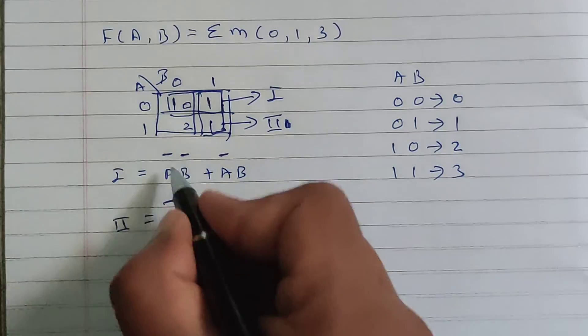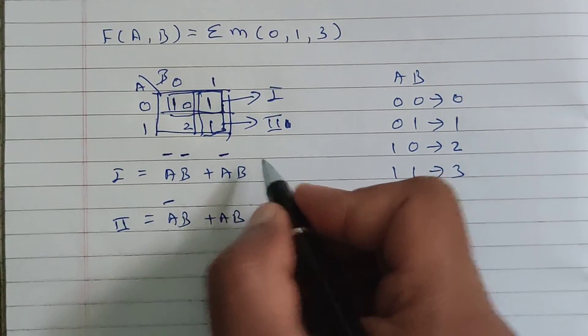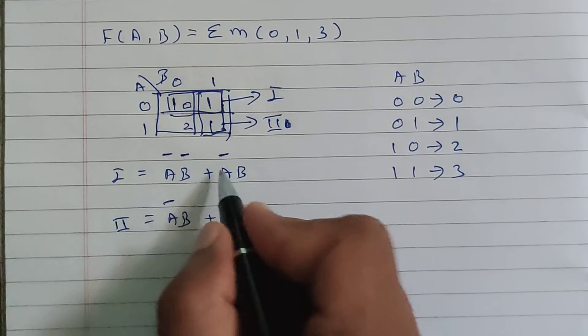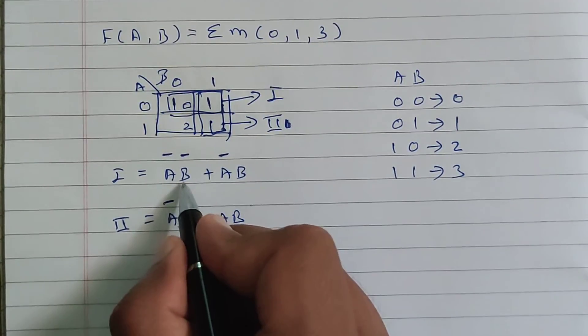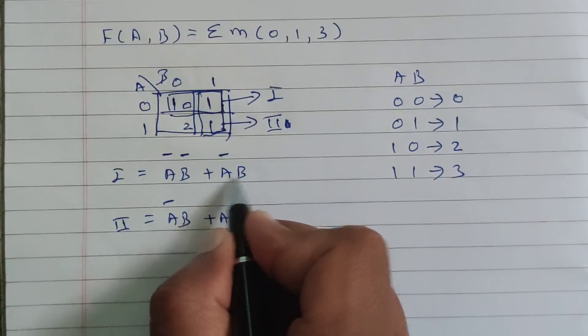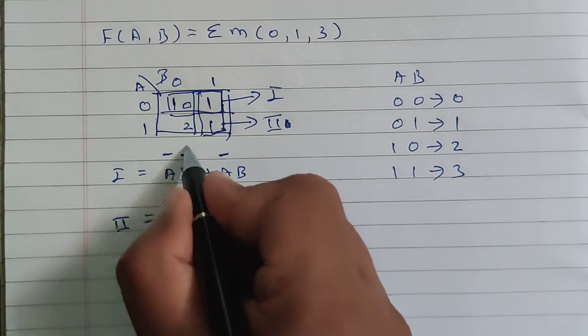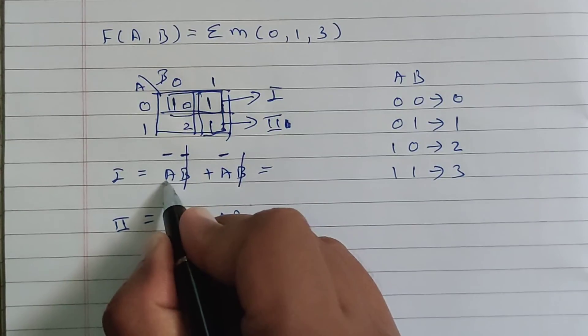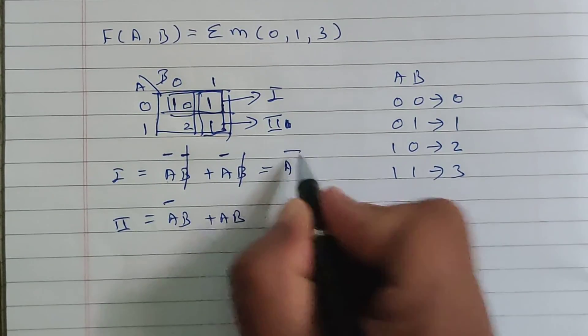Now what we will do, we will cancel the terms which are changing its sign. So A bar and A bar is there. So we will not cancel that because it is not changing its sign. But B bar and B is there. B is changing its value. That's why we will cancel this. So from group number one, we will get A bar plus A bar, which is A bar.